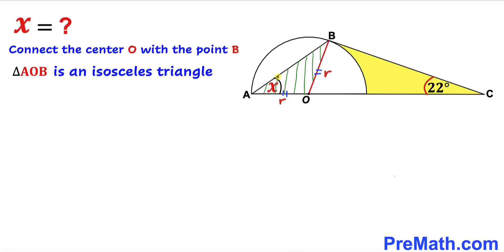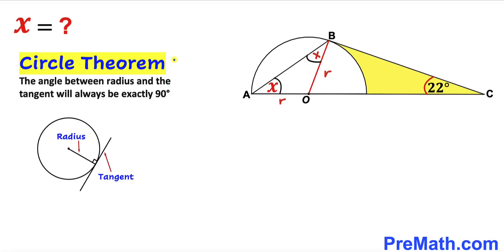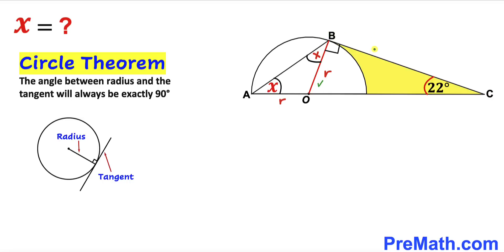So if this angle is x, then this angle has got to be x as well. Now let's recall the circle theorem: the angle between the radius and the tangent line will always be exactly 90 degrees. Therefore in our case, angle OBC is going to be a 90 degree angle, since OB is our radius and BC is our tangent line.